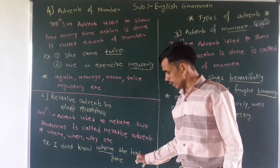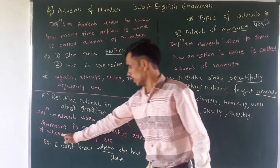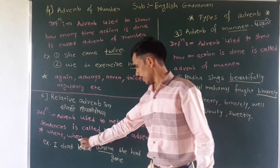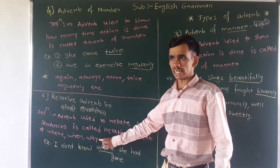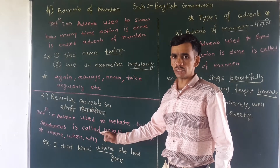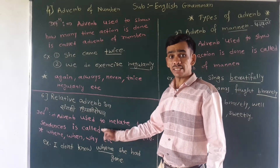Vaha kaha goi. So as like here, 'when' and 'why' — these are the relative adverbs. We use them to show the relation between two sentences.